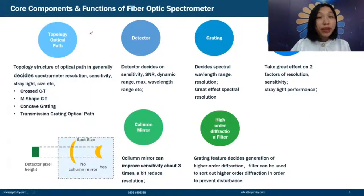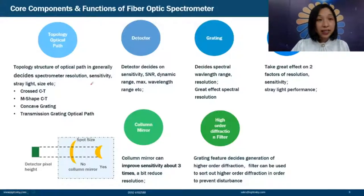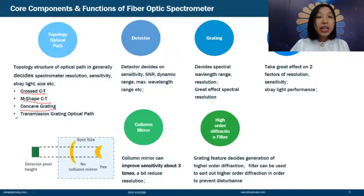For a fiber-optic spectrometer, the first consideration is the topological optical structure, which is generally decided by the spectrometer's resolution, sensitivity, stray light, and size. We have four types: the cross-CT optical path, M-shaped CT optical path, concave grating optical path, and transmission grating optical path.